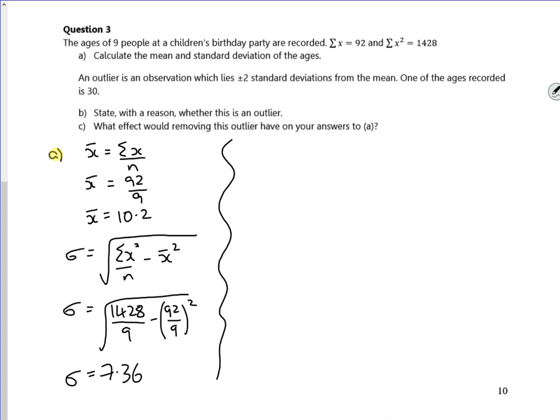So part B says, state with a reason whether this is an outlier. So let's look at, the completed pack has just looked at the greater than there, because they know the answer. But you'd look at the less than as well if you didn't know.